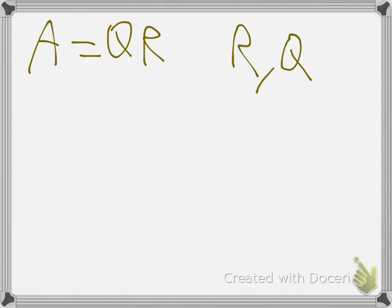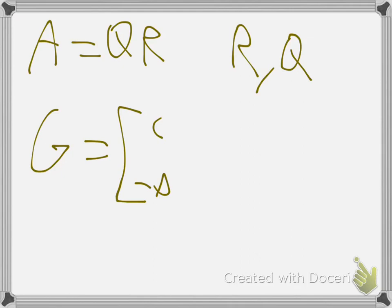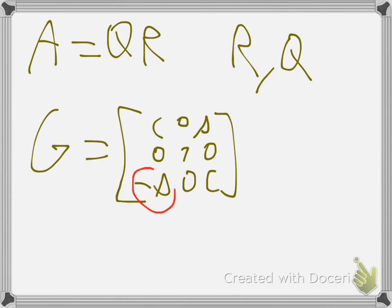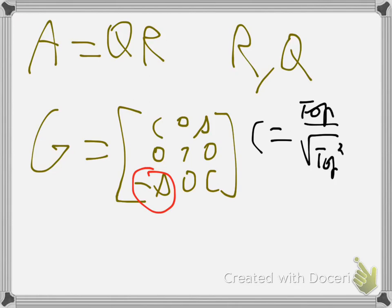Remember: your Givens Rotation matrix always has the form with C (cosine) and S (sine), ones in the diagonal, and the minus sign always in the position of the element you want to eliminate. Cosine is given by the top element over the square root of top squared plus the element you want to eliminate. Sine is the inverse.